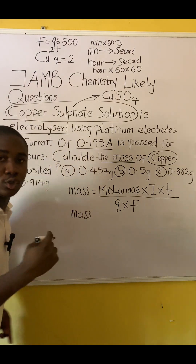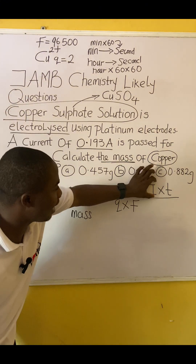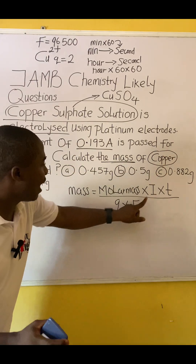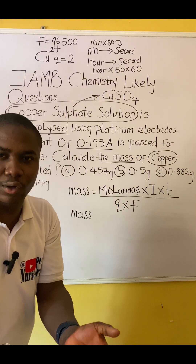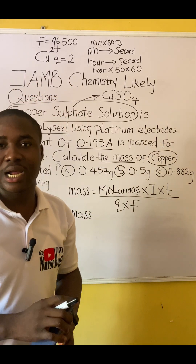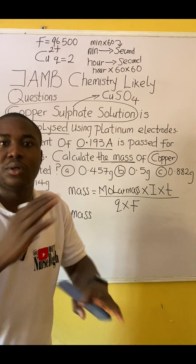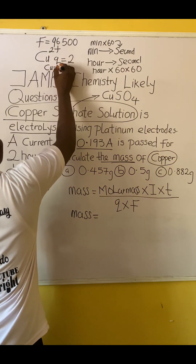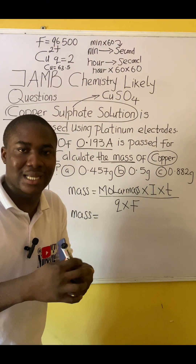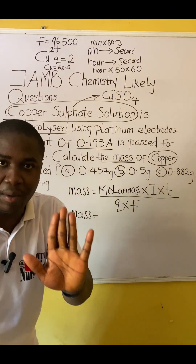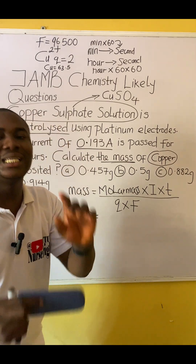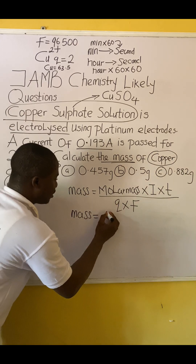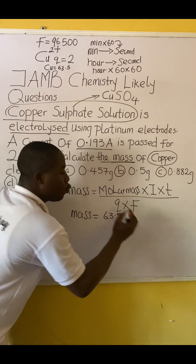They are asking us to calculate mass, so mass is the subject of the formula. The molar mass of copper — the atomic mass of copper is 63.5, so the molar mass is 63.5 grams per mole. The current is 0.193 amperes. The time is two hours, which we convert: two hours × 60 × 60 = 7200 seconds.